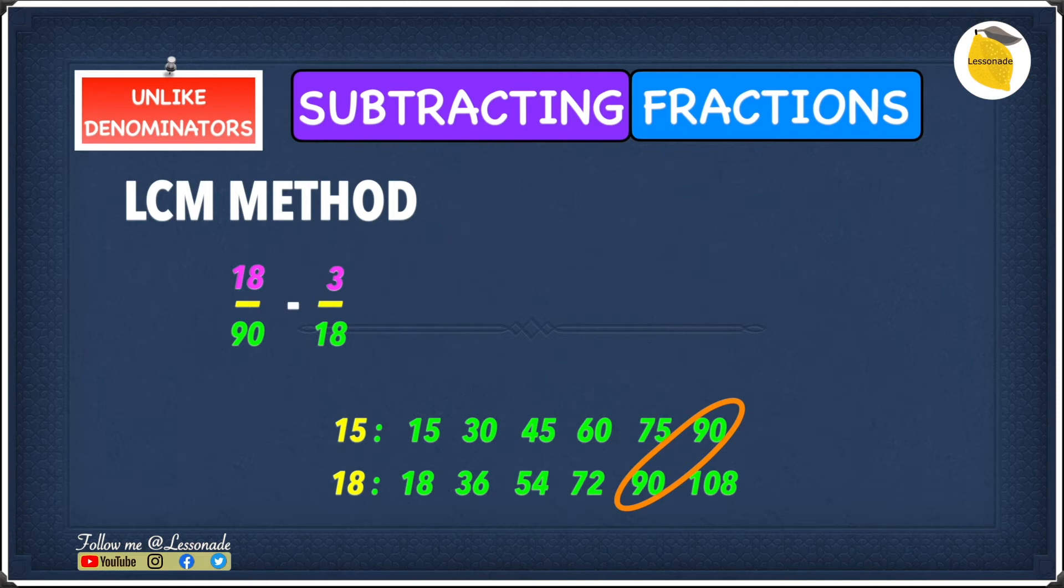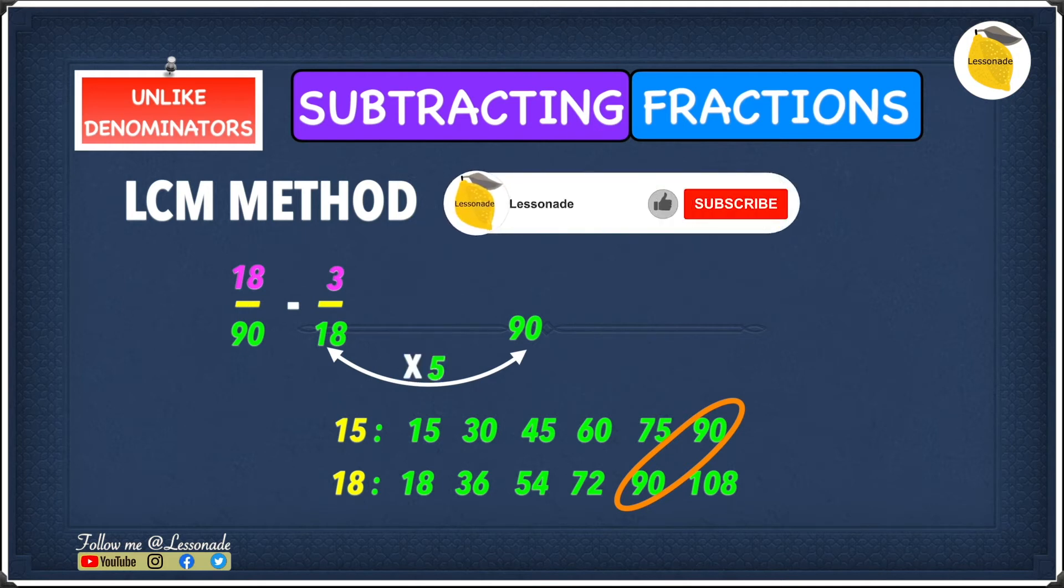So now we can move on to 3 over 18 and do the same thing. So what number do we have to multiply to 18 to give us 90? The number we have to multiply to 18 is obviously 5. 18 times 5 gives you 90.